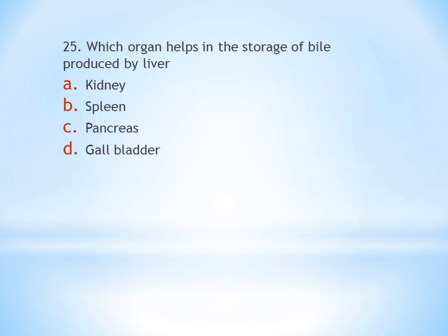Twenty-fifth question: Which organ helps in the storage of bile produced by the liver? A. Kidney, B. Spleen, C. Pancreas, D. Gallbladder. The liver produces bile and the gallbladder stores it. Answer is D, gallbladder. That covers all 25 questions. Thank you.